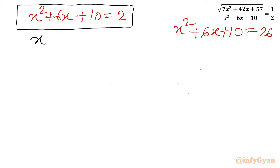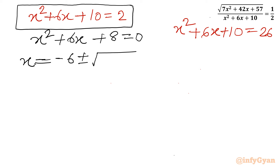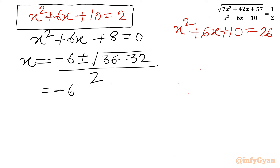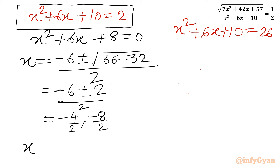For the first equation, x² + 6x + 8 = 0. Applying the quadratic formula: x = (-6 ± √(36 - 32)) / 2 = (-6 ± √4) / 2 = (-6 ± 2) / 2. So x = (-6 + 2)/2 = -4/2 = -2, and x = (-6 - 2)/2 = -8/2 = -4. Two real solutions: x = -2 and x = -4.